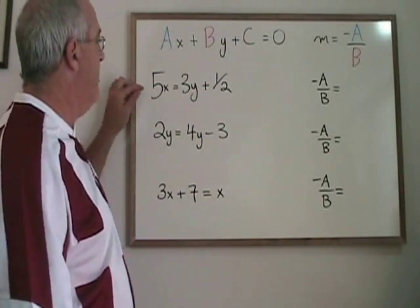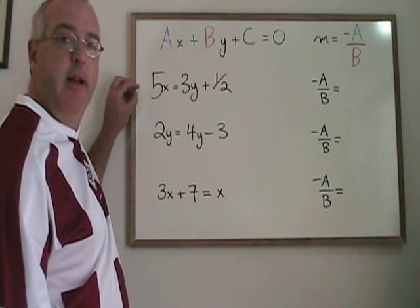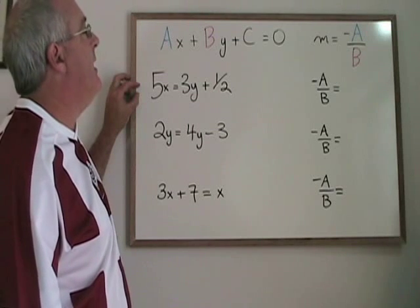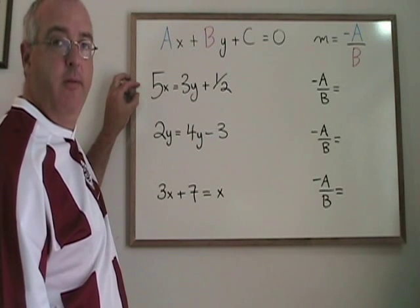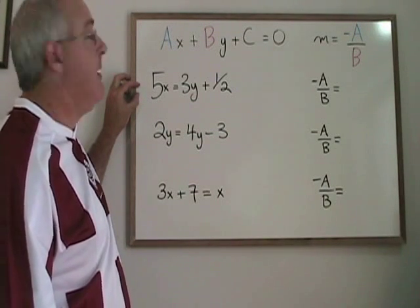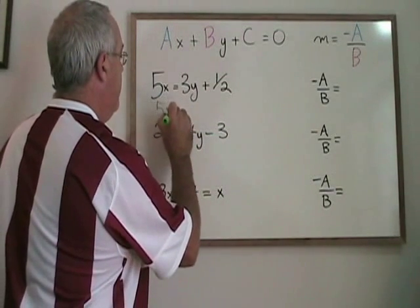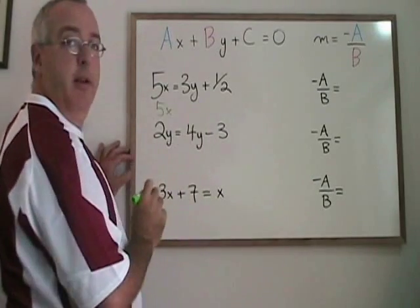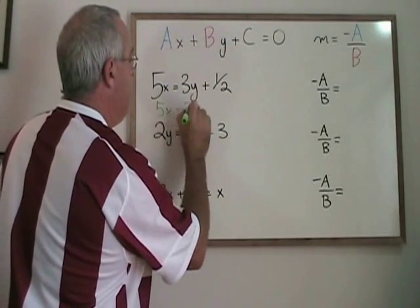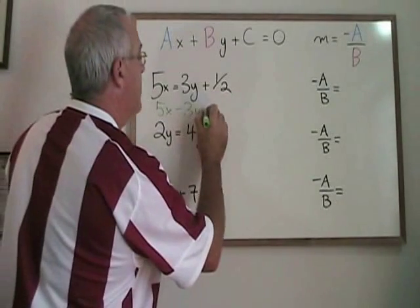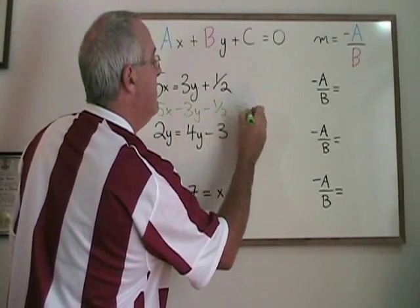In this fourth example, 5x equals 3y plus a half. We do not have the equation written in the ax plus by plus c equals zero form, so we have to do some algebra to get it in that form. I'll leave the 5x where it is. If I move 3y to the left of the equals, it becomes minus 3y. And if I move one half to the left of the equals, it becomes minus one half equals zero.